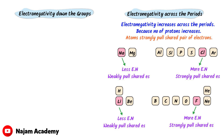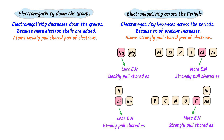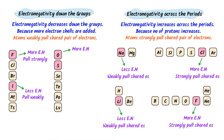Now we will learn electronegativity down the group. Remember that electronegativity decreases down the group because more electron shells are added and the size of the atom increases, due to which the atom has less ability to pull the shared pair of electrons. For example, in group 7, fluorine is more electronegative than iodine because fluorine has smaller size. Similarly, in group 6, oxygen is more electronegative than sulfur because oxygen has smaller size and sulfur has larger size. Therefore, electronegativity decreases down the group and increases across the period.